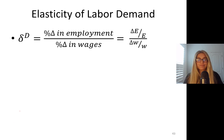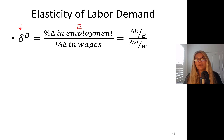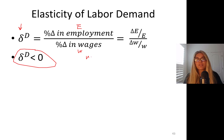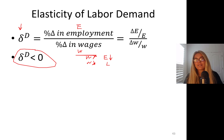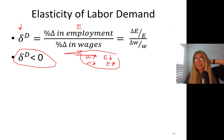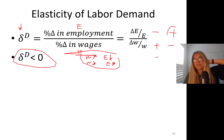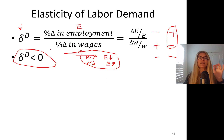Elasticity of labor demand — written as ηD — equals percent change in employment divided by percent change in price of labor, which is wages. Elasticity of labor demand is always a negative number. Wages go up, employment goes down. Both substitution and scale effects work in this direction. They move in opposite directions — one goes up, the other goes down — which is why the result is always negative.